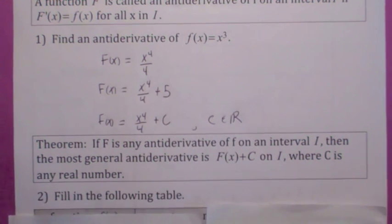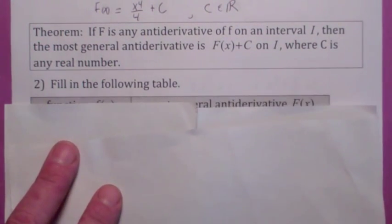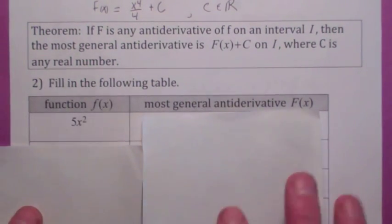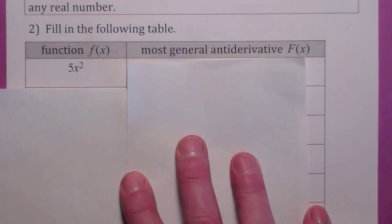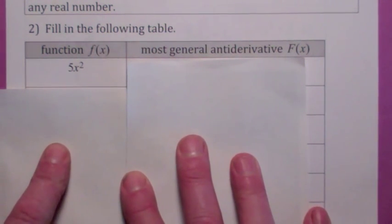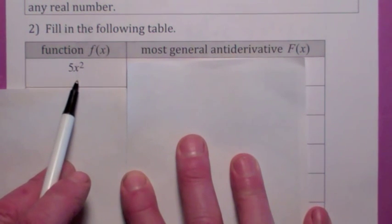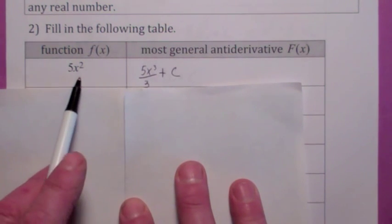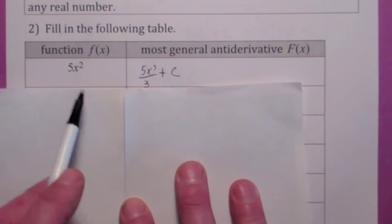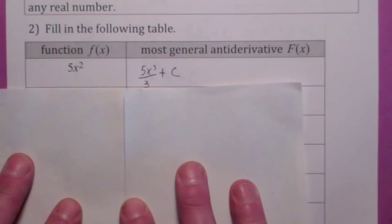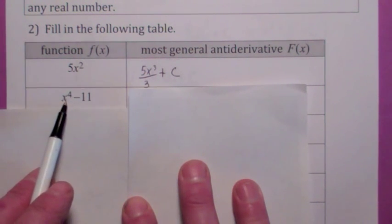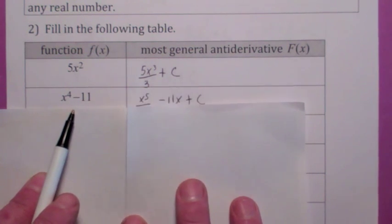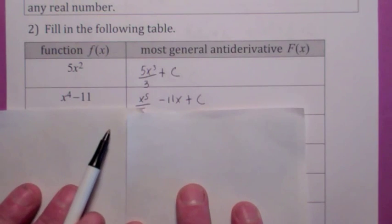On your homework, if it says find the most general antiderivative, don't forget the plus C. What's the most general antiderivative of 5x squared? The 5 factors out, just like with the derivative. You add 1 to the exponent and divide by the new exponent, so it would be 5x to the 3rd over 3 plus C. That's the pattern. What's the most general antiderivative of x to the 4th minus 11? The antiderivative of x to the 4th is x to the 5th over 5, and the antiderivative of negative 11 is negative 11x, plus C. Don't forget the plus C.